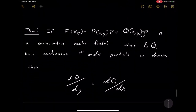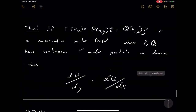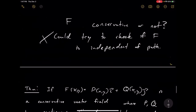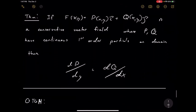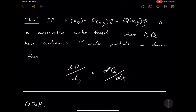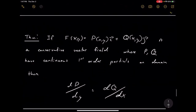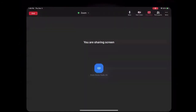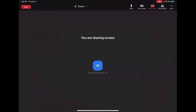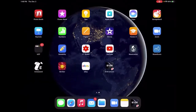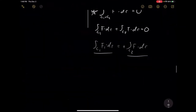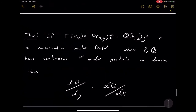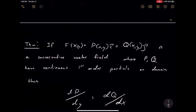We're going to develop techniques to determine if F is conservative. We'll see one here and more in later sections. First, let's assume we have a conservative vector field and look at some of its properties. So a vector field F(x,y) is a function from R² to R²: its input is in R² and its output is in R². We can write F(x,y) as a vector broken down into two component functions.